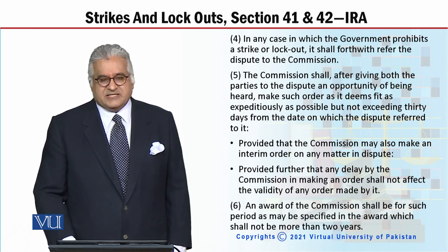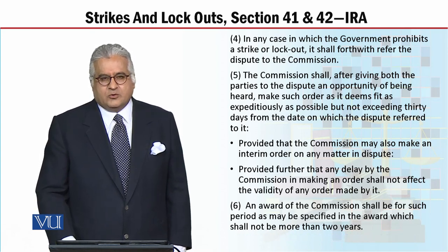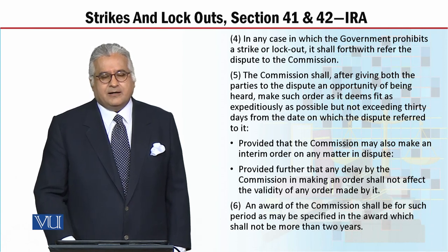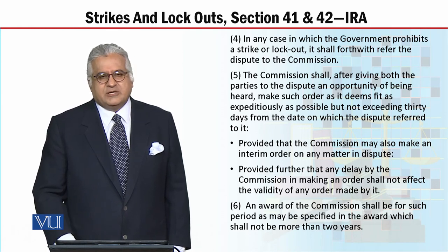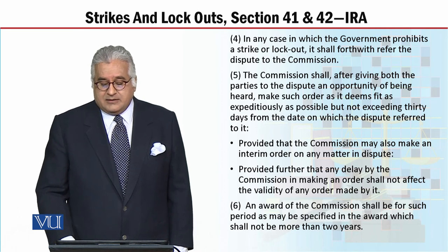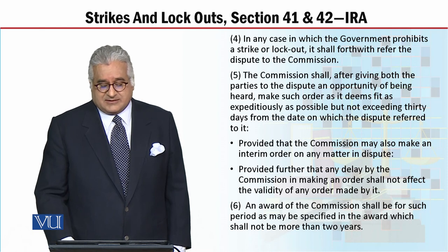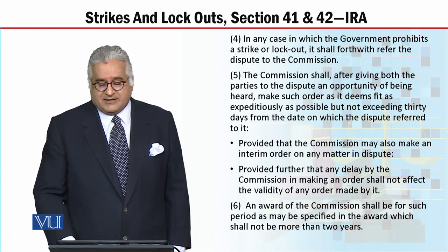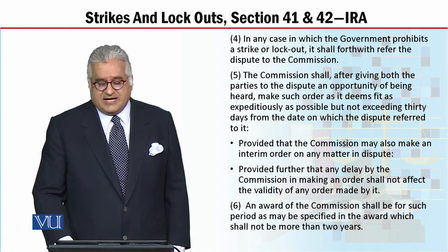My dear students, once the dispute goes to the Commission, the Commission will hear both parties under the rule of natural justice — meaning no decision shall be made without hearing the other party. After that, it will try to resolve the matter as expeditiously as possible, and the Commission may also pass interim orders. Provided further that any delay by the Commission in making an order shall not affect the validity of any order made by it. An award of the Commission shall be for such period as may be specified in the award, which shall not be more than two years.